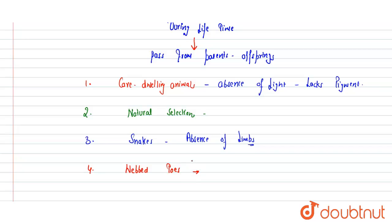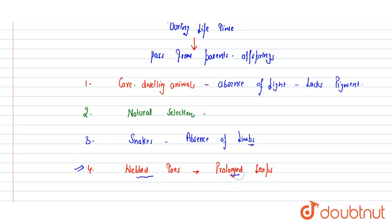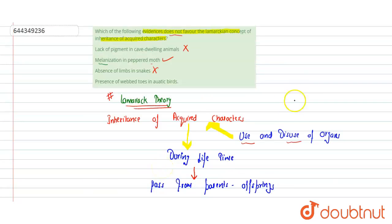The fourth option is presence of web toes in aquatic birds. Web toes help birds with prolonged leaps and flight. These are not vestigial parts — they are feet modifications in certain birds. Due to the excessive use of their feet for swimming and leaping, they developed web toes. This also favors Lamarck's theory, so this is also an incorrect option.